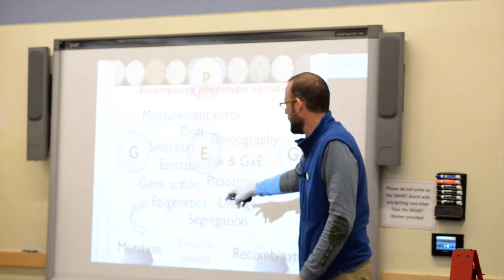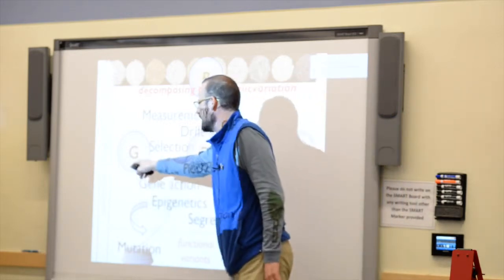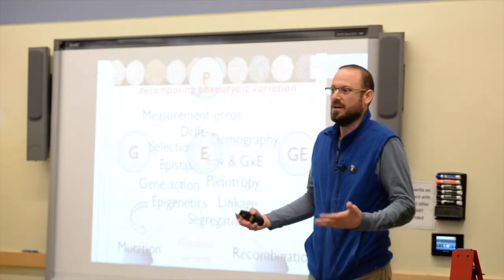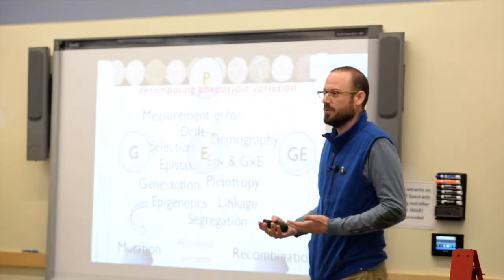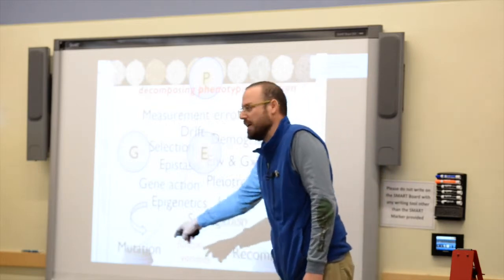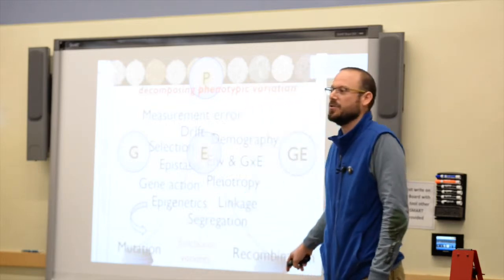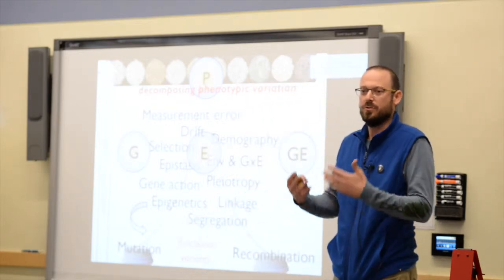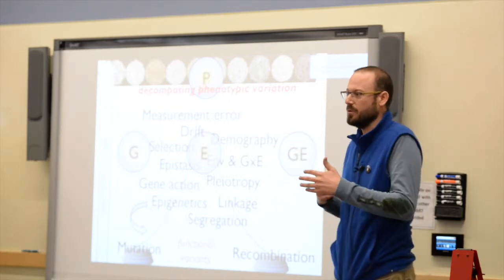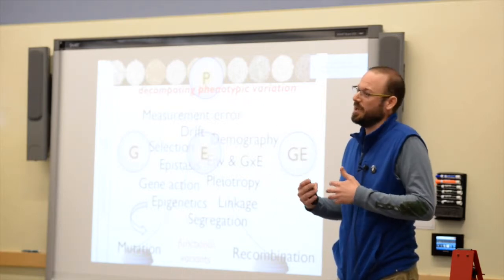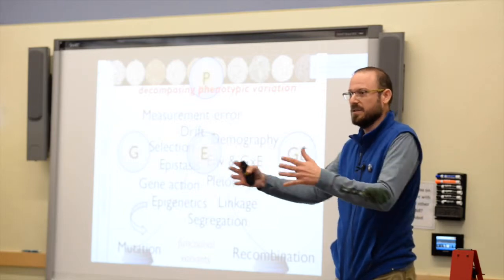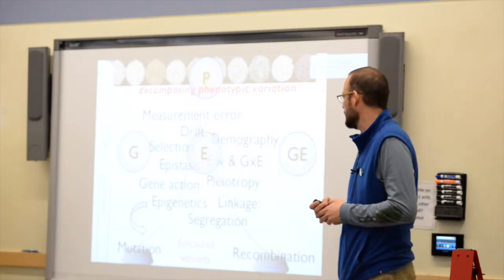If you try to break down the G component and ask where the diversity arises from — what are the generative forces of variability — that includes things like mutation and recombination. Mutation generates new variants in a genome, recombination can shuffle the genome, and independent assortment can reassemble it in different ways in the population.